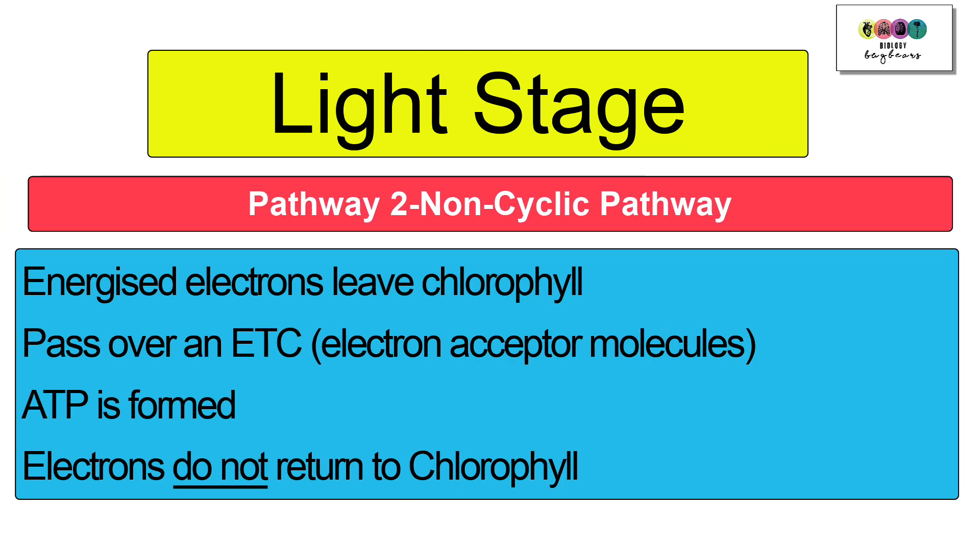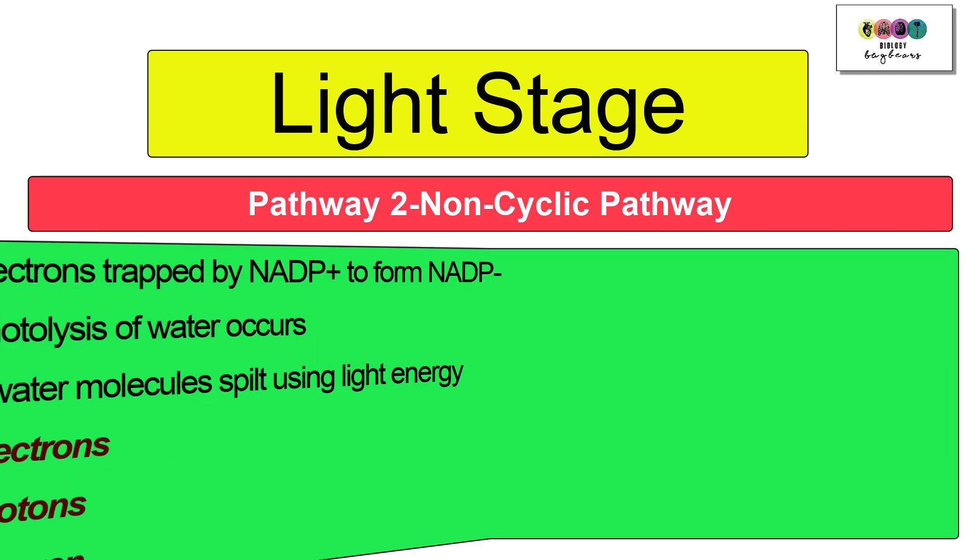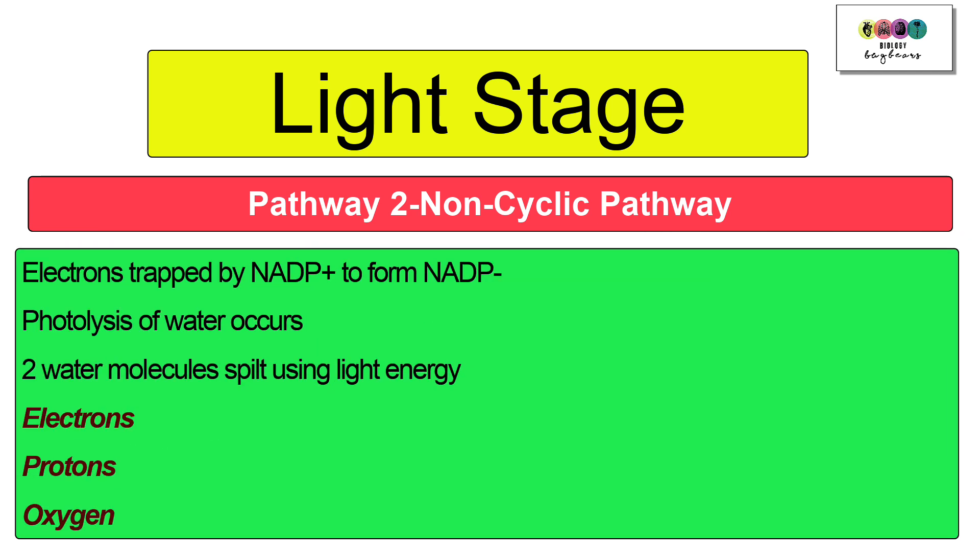In pathway two the energized electrons leave chlorophyll, they pass over the electron transport chain so those electron acceptor molecules, ATP is formed but those electrons do not return to chlorophyll. Ultimately the electrons that left chlorophyll will eventually get trapped by NADP+ to form NADP-.